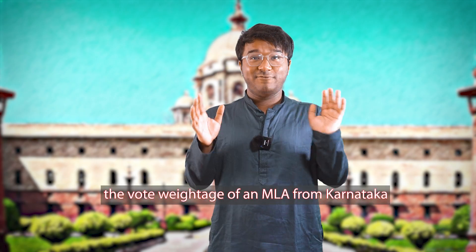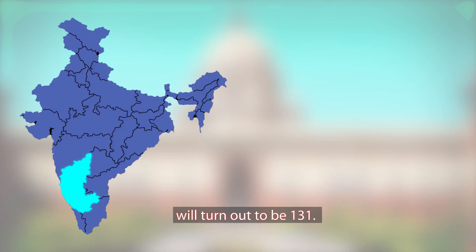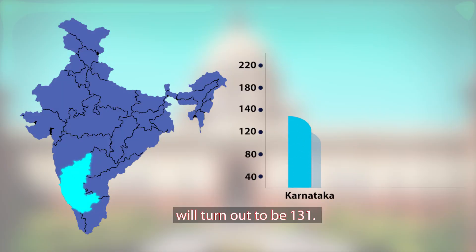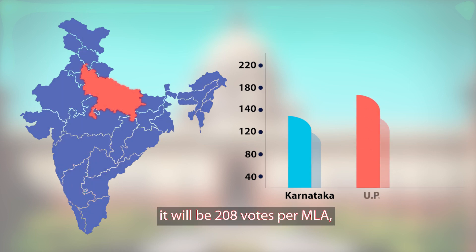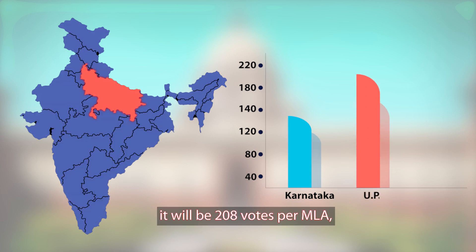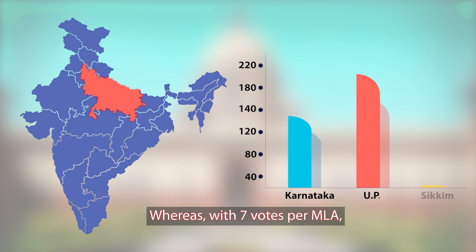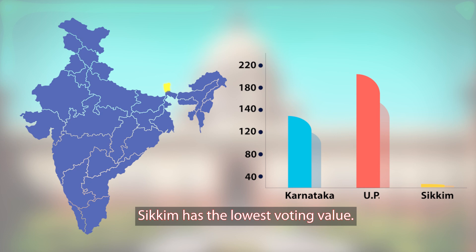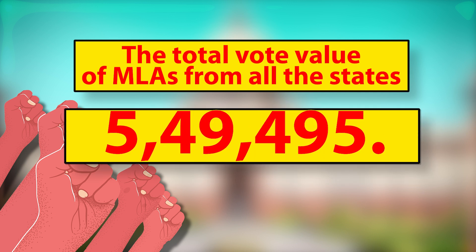Using the formula, the vote weightage of an MLA from Karnataka will turn out to be 131. Similarly, for a populous state like UP, it will be 208 votes per MLA, which is the highest voting value. Whereas, with 7 votes per MLA, Sikkim has the lowest voting value. And the total vote value of MLAs from all the states combined comes up to be 5.5 lakh.